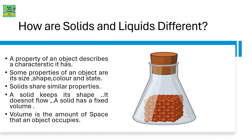How are solids and liquids different? A property of an object describes a characteristic it has. Some properties of an object are its size, shape, color and state.